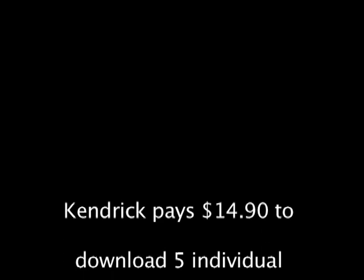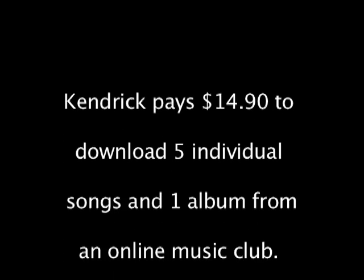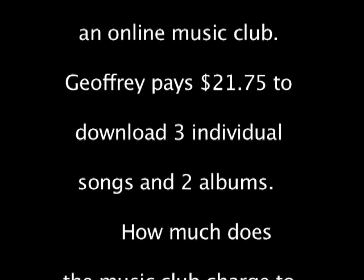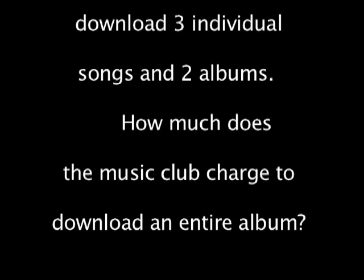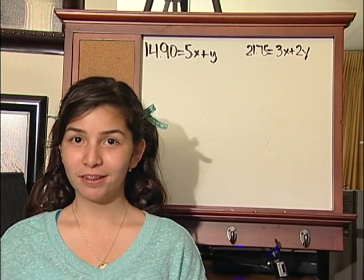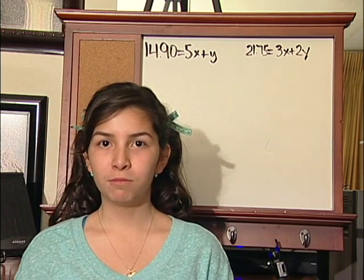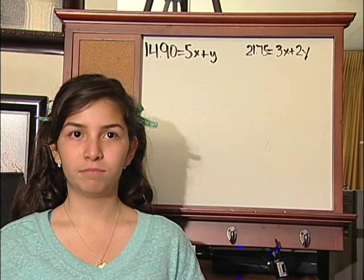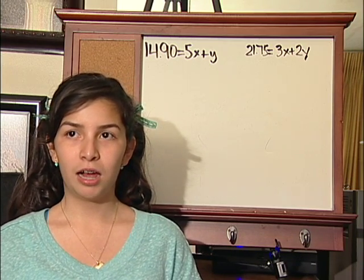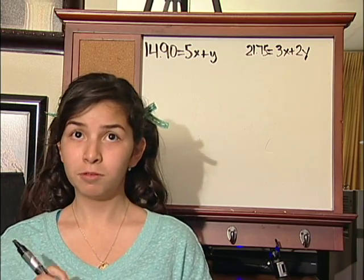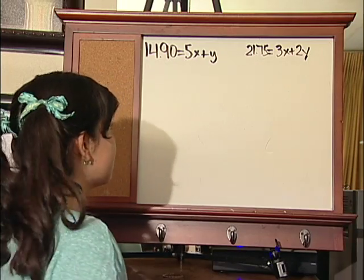Kendrick pays $14.90 to download five individual songs and one album from the online music club. Jeffery pays $21.75 to download three individual songs and two albums. How much does the music club charge to download an entire album? Sometimes we come across situations where we need to use systems of equations. For this example, we will be using substitution to solve for the unit price of individual songs and albums.